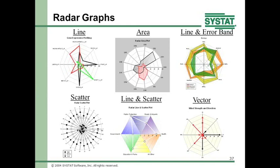Radar graphs solve the multidimensional visualization problem. We have graphs for two dimensions, three dimensions — and radar graphs for n dimensions. There are examples here with 8, 12, 6, and around 20+ dimensions. One application showed patterns from gene expression for three types of pediatric brain cancer, and lo and behold, the green was down to the right, the black to the right up and down, and the red was upper left — identifying distinct patterns. You can also have area graphs, line and error bands, scatter, line and scatter, and vector plots emanating from the origin in radar graphs.